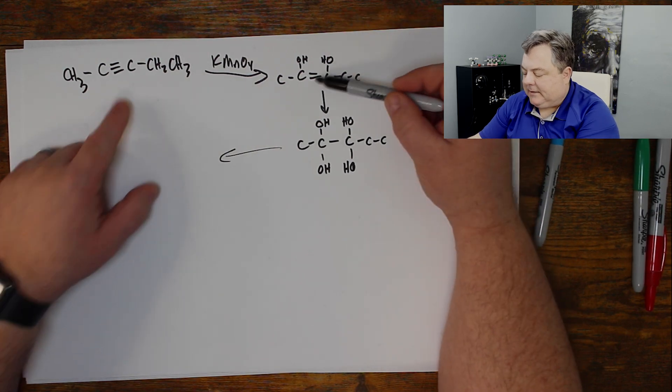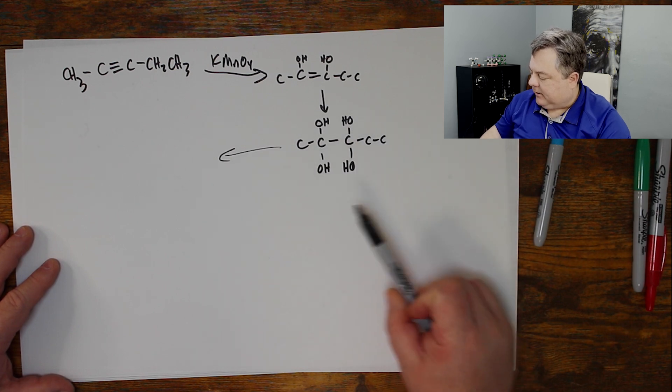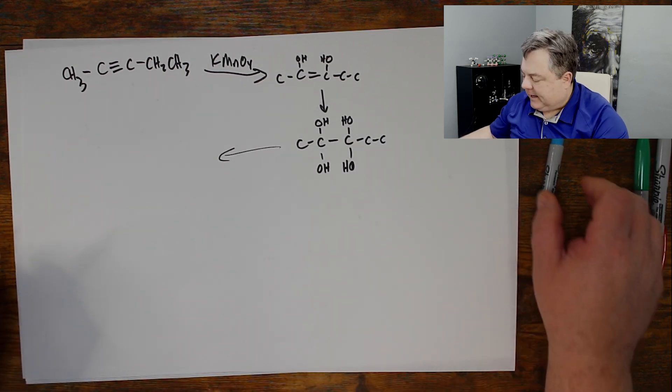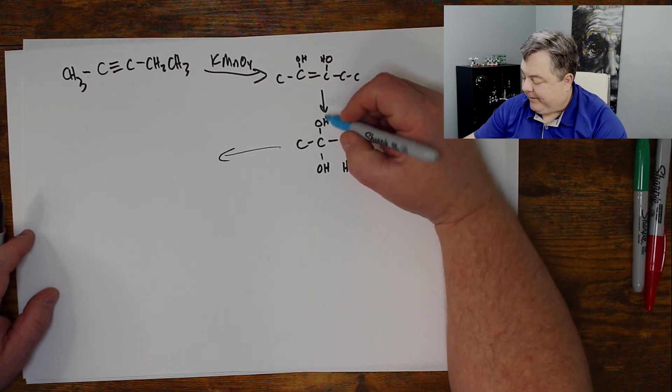So I have two pi bonds, so I can give it the horns once, give it the horns twice, and make these four diols. That should look like maybe an unstable compound, like it wants to fall apart, because I don't see that very often. And that's what happens.